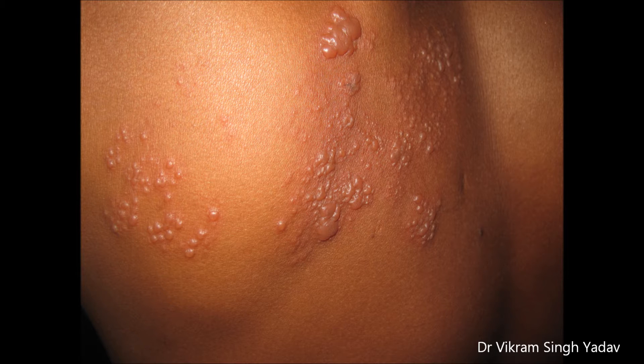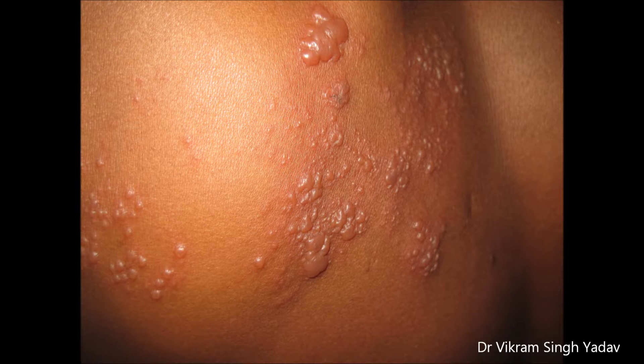They are commonly seen in the thoracic and cervical dermatomes. Here you can see involvement in the thoracic region as well as the axillary region. Later on, these vesicles become pustular and then crusts are formed.